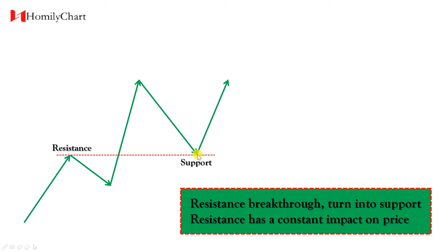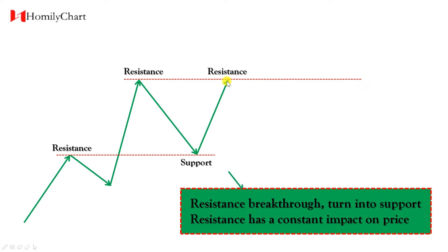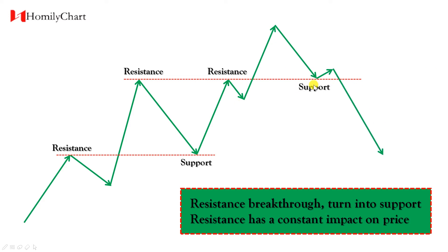We get support here, and this is the previous high — the resistance. This resistance will have a constant impact on price. Here we face the same resistance again. And once price breaks through, the resistance will convert to support, and we get support at the same price. So these are the two properties of resistance and support.